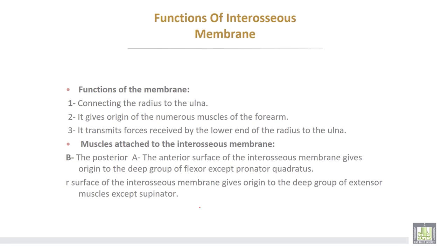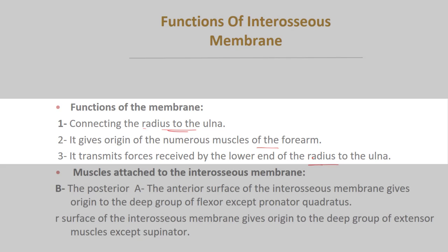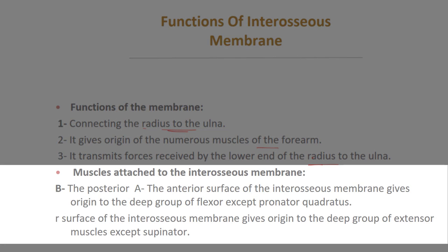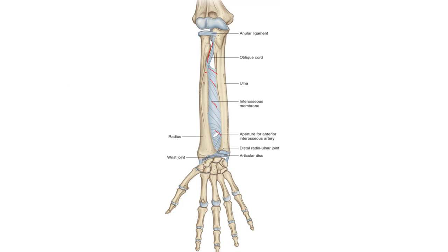The functions of the interosseous membrane: number one, connecting the radius to the ulna; number two, it gives origin to numerous muscles of the forearm; number three, it transmits forces received by the lower end of the radius to the ulna. The anterior surface of the interosseous membrane gives origin to the deep group of flexor muscles, except pronator quadratus. The posterior surface gives origin to the deep group of extensor muscles, except supinator. This is the interosseous membrane and this is the oblique cord.